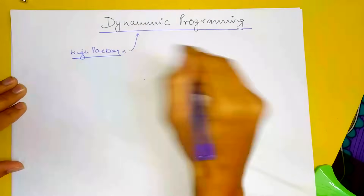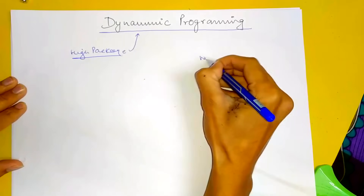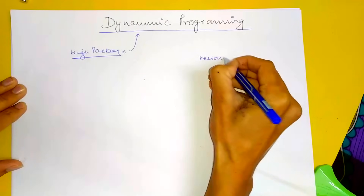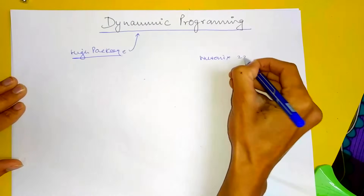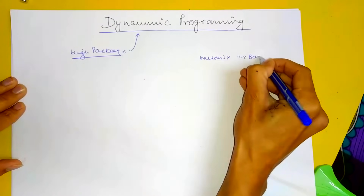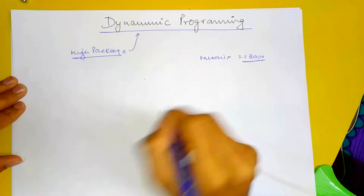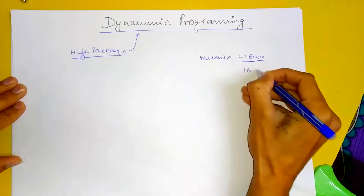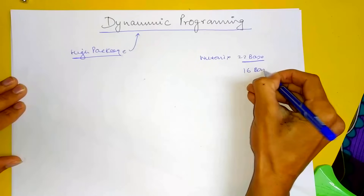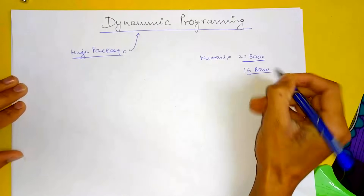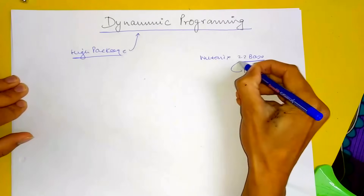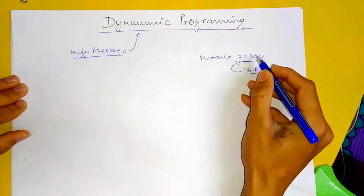My column: first is Nutanix with a base salary of 22 lakhs. Flipkart is 16. Base salary 22-23. Nutanix.